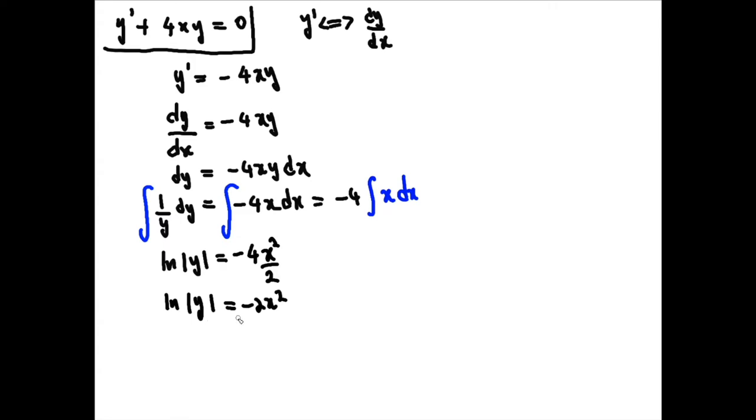What we can do is we can take the exponent of both sides, and that would just give us the absolute value of y. As an aside, if you take the exponent of a logarithm, that's the inverse essentially. So you get whatever's inside this. If you take e to the ln of x, you get x. Similarly, you get ln of y here, so you get the absolute value of y here. And we have e to the power of minus 2x squared.